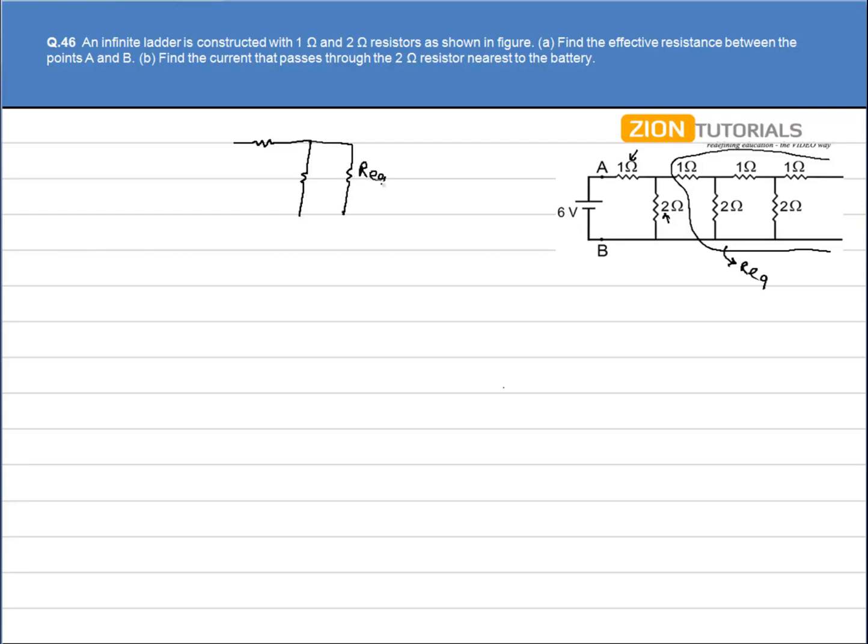This is my R equivalent, this is the 2 ohm that I neglected, the 1 ohm that I neglected earlier. Point A, it is connected to a battery of 6V and here is my circuit. This is my point B.